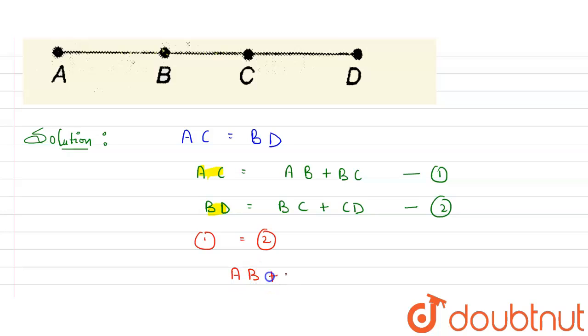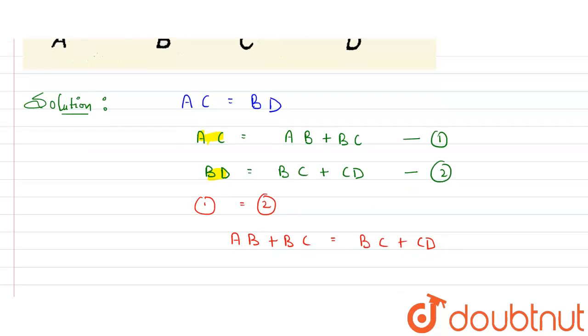So put the value here. AC can be written as AB plus BC. It will be equal to BD value, that is BC plus CD here. This whole is value of AC and this whole is value of BD.